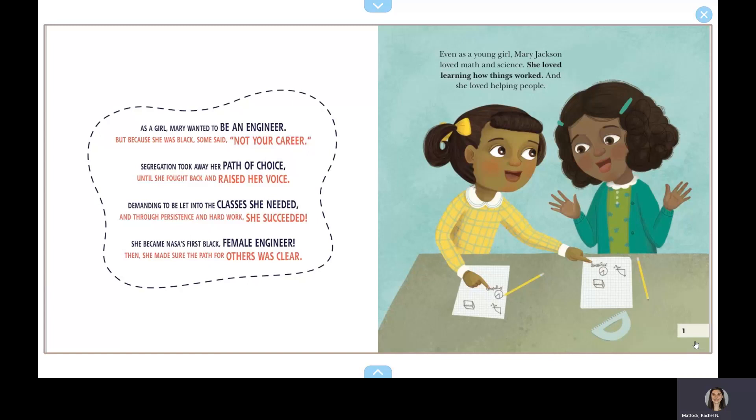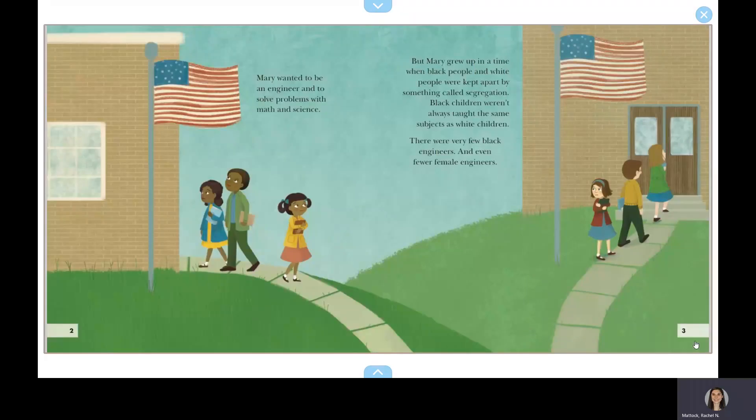Even as a young girl, Mary Jackson loved math and science. She loved learning how things worked, and she loved helping people. Mary wanted to be an engineer and to solve problems with math and science. But, Mary grew up in a time when Black people and white people were kept apart by something called segregation. Black children weren't always taught the same subjects as white children. There were very few Black engineers, and even fewer female engineers.